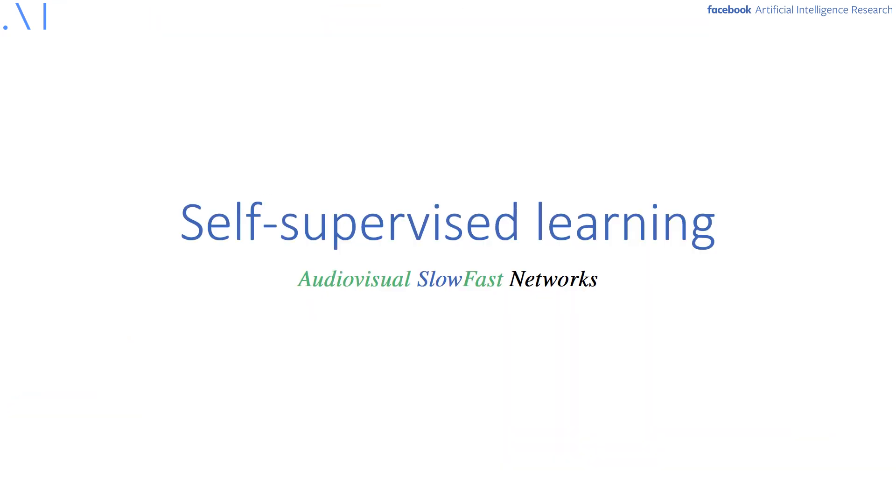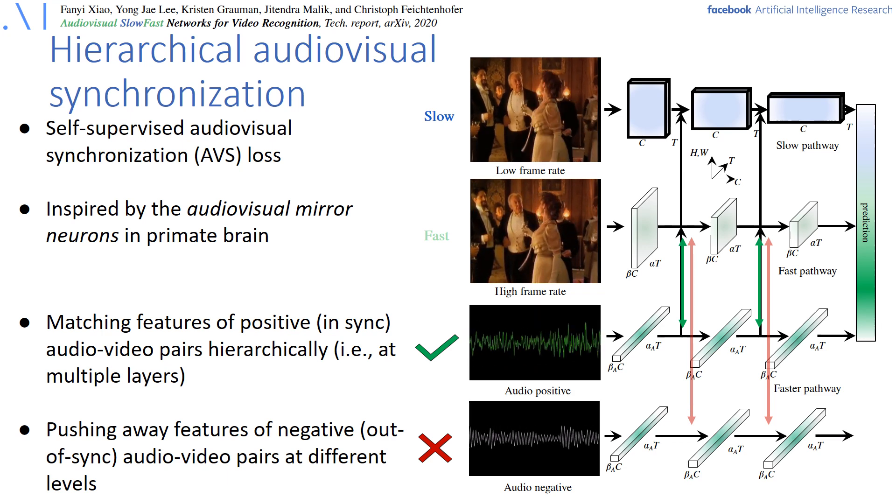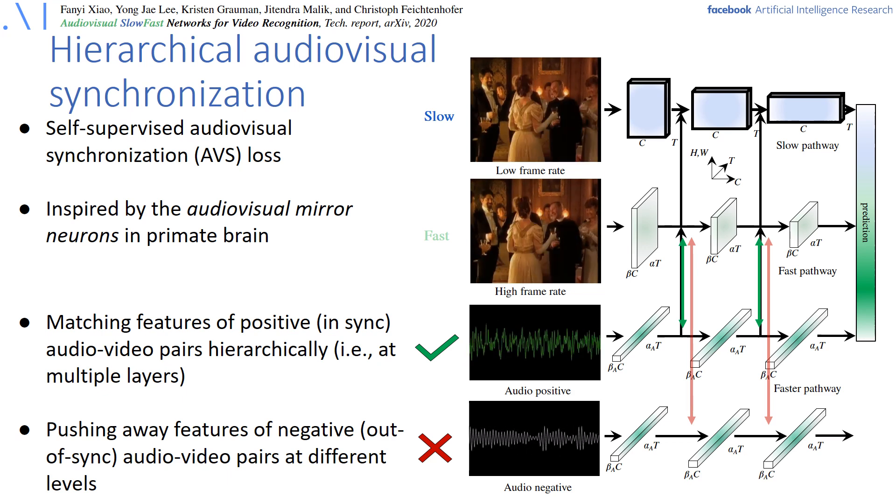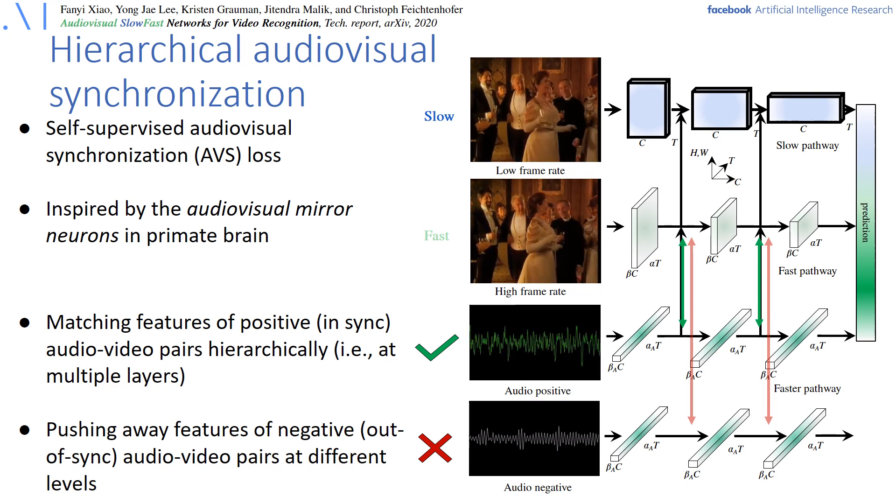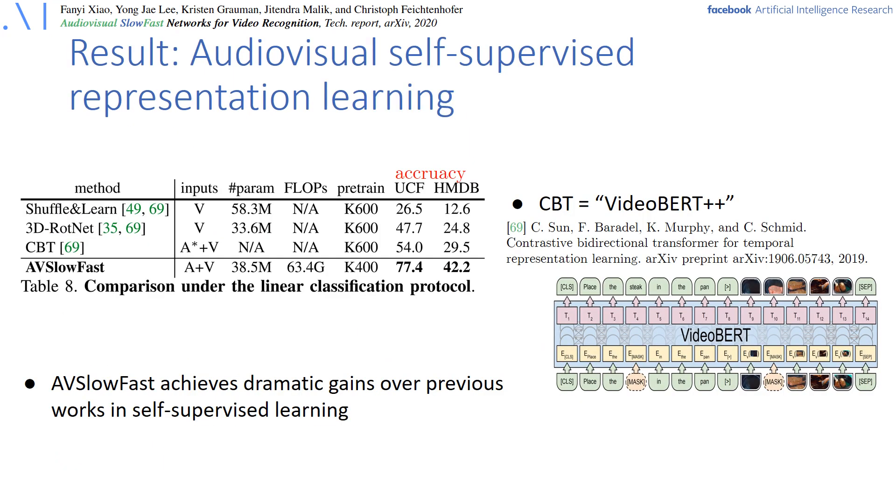I would also like to show an example where we apply these audiovisual networks to self-supervised learning. For this we use audiovisual synchronization to encourage the network to produce features that are generalizable across modalities. This is inspired by studies on the audiovisual neural neurons in the cortex. Specifically, we add an auxiliary task to classify whether a pair of audio and visual frames are in sync or not. In our experiments, we see that this audiovisual SlowFast architecture achieves state-of-the-art performance on multiple datasets for supervised classification and detection, but also on the self-supervised tasks. Here we pre-train the model using an off-the-shelf pretext task and evaluate it against the state-of-the-art SSL methods, and we can see that we can achieve a good gain over the previous work in this space.